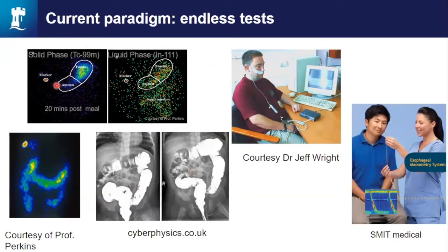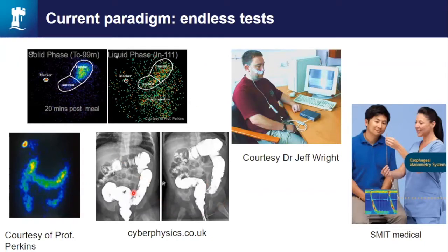The current paradigm for many conditions, and I'll focus quite a lot on GI, is a litany of tests. Patients undergo a range of tests — for instance, if you have a GI functional disorder like irritable bowel disease or inflammatory bowel disease, you might have gamma scintigraphy, dual isotope tests, a barium enema, or intubation. Many of these tests perturb normal physiology — having a tube stuck up your nose to measure gastric function is not pleasant.